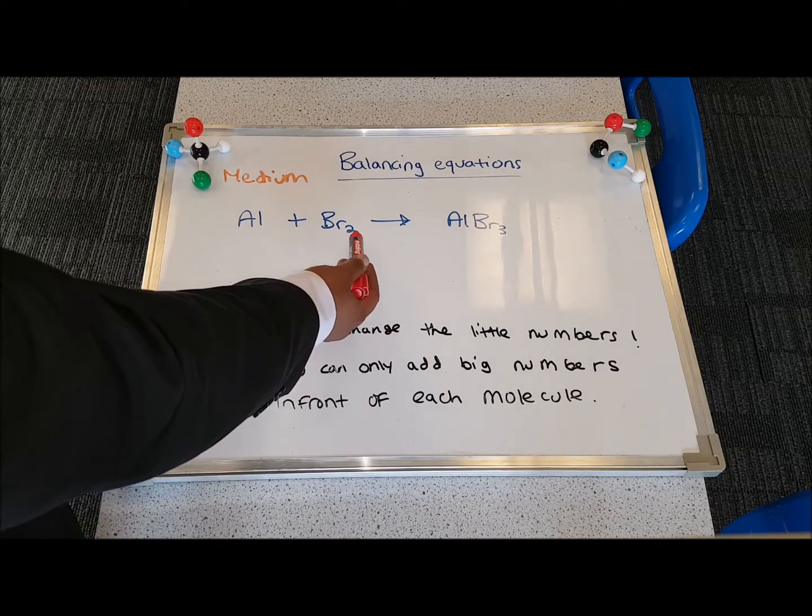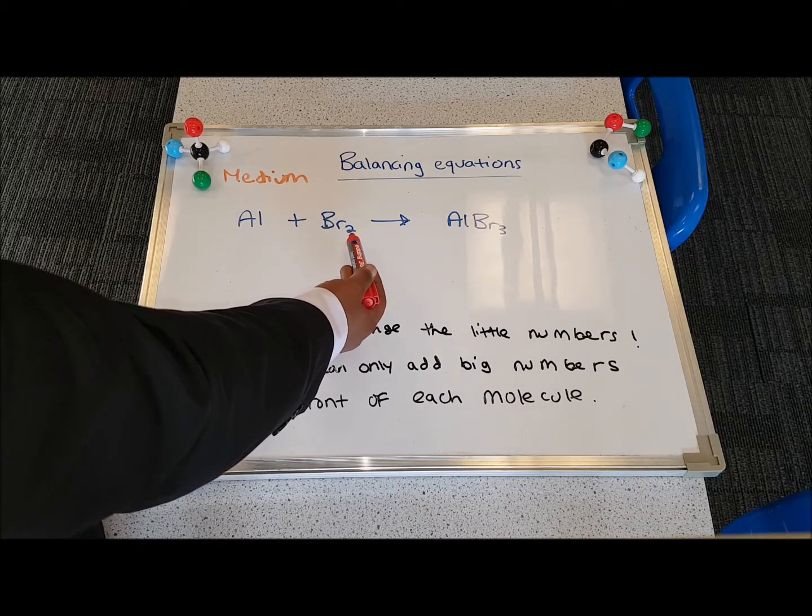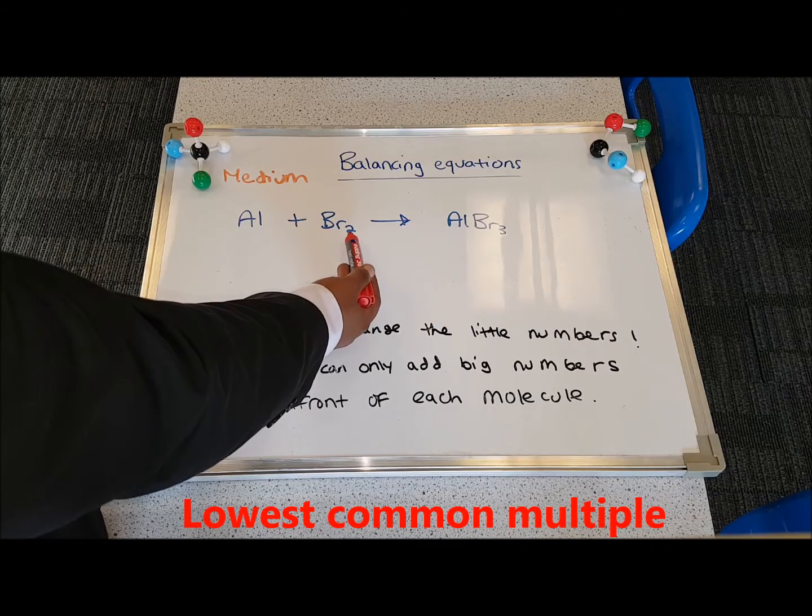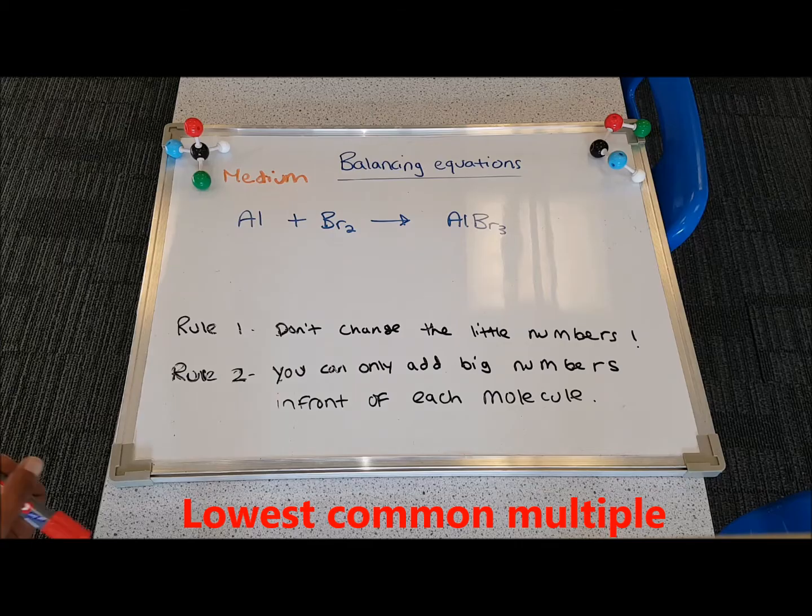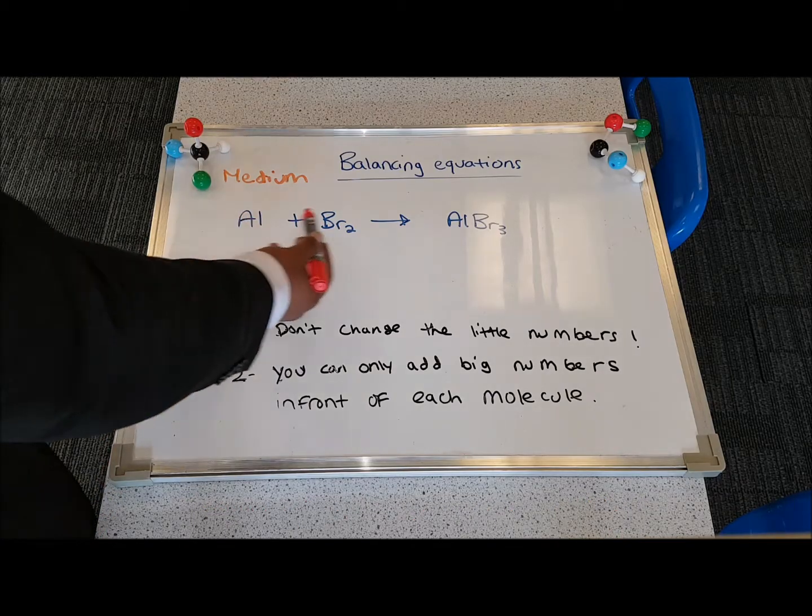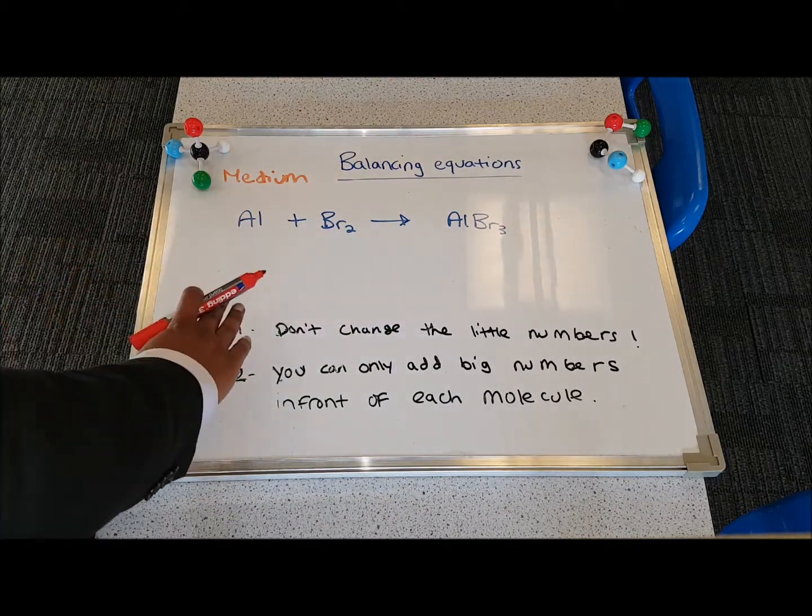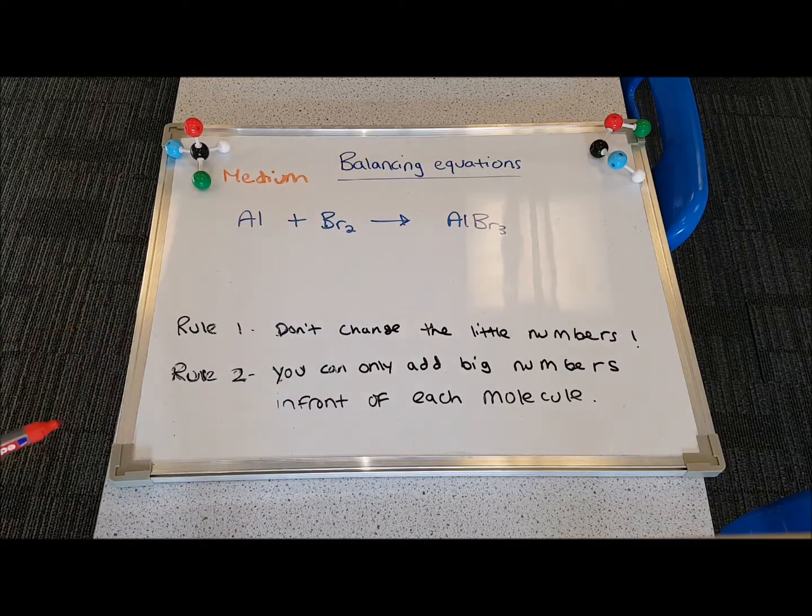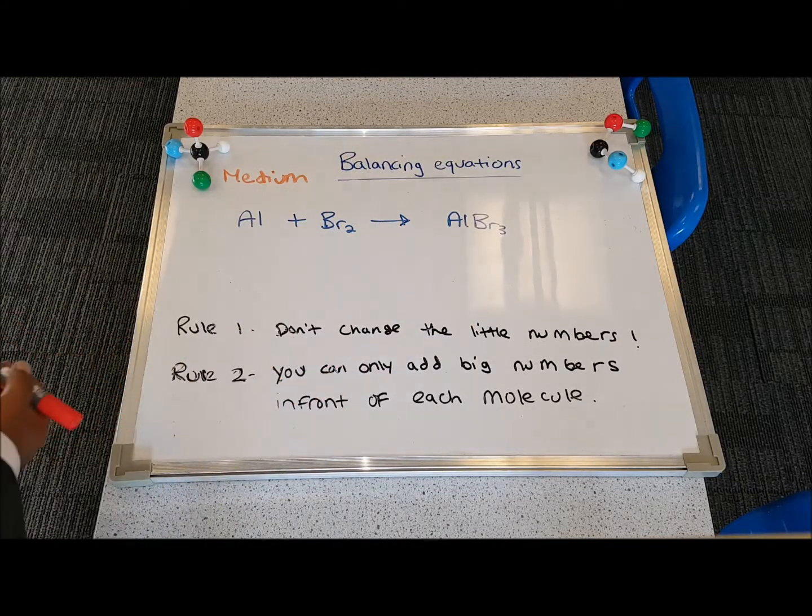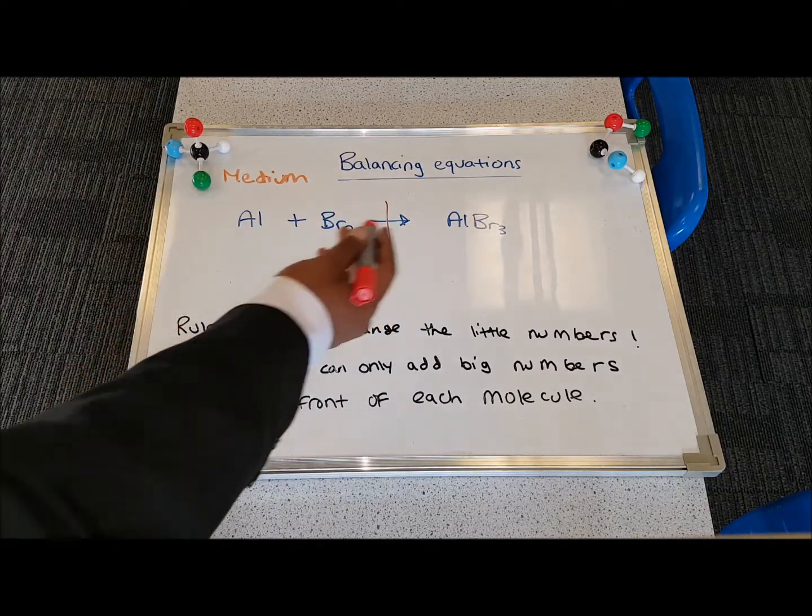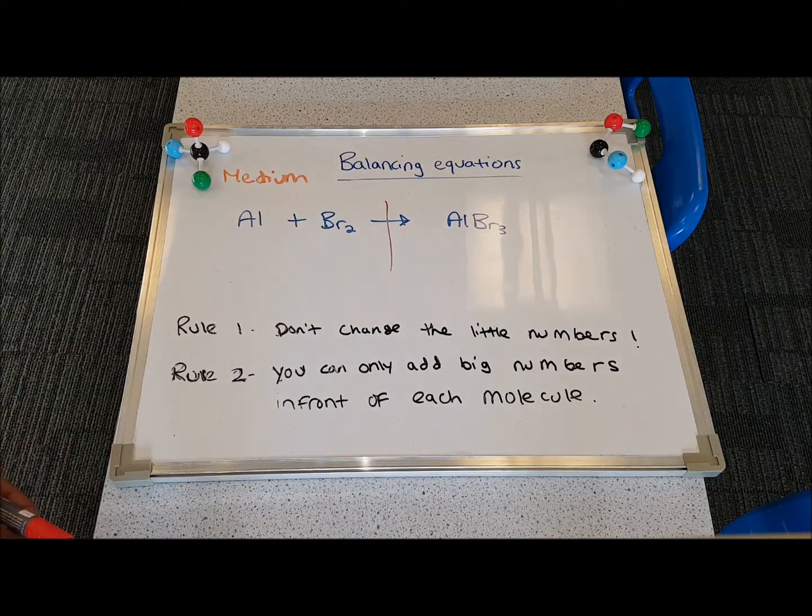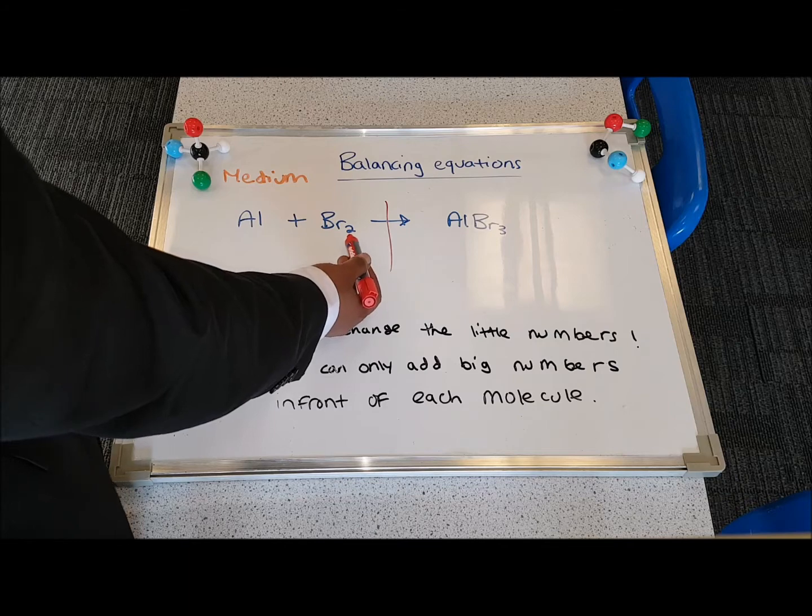If you're trying to balance the bromines, you need to find the lowest common multiple of 2 and 3. The aluminiums are already balanced for now, so I'm going to leave that. If you look at the Br2 on the left and the Br3 on the right, they're obviously unbalanced. So I have two bromines on the left, three on the right. So I need to find the lowest common multiple of 2 and 3.